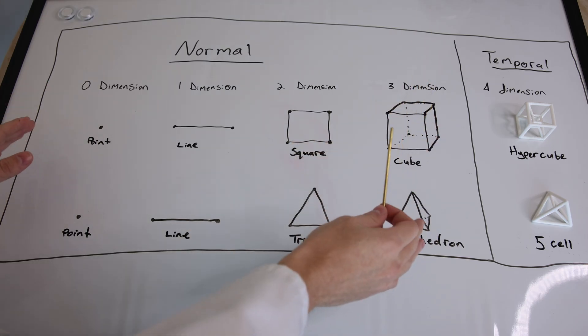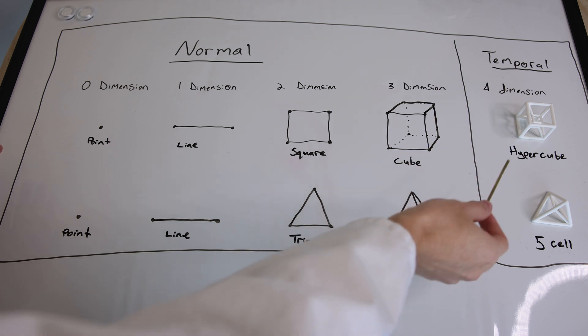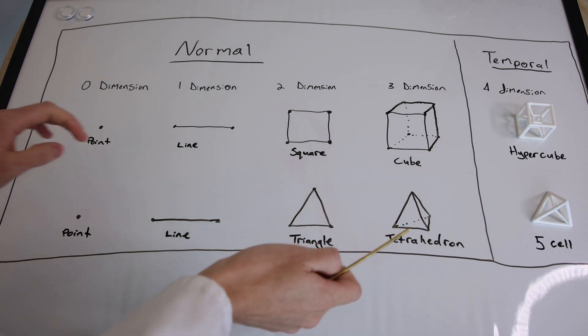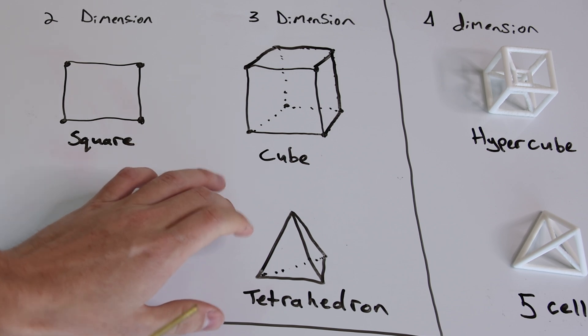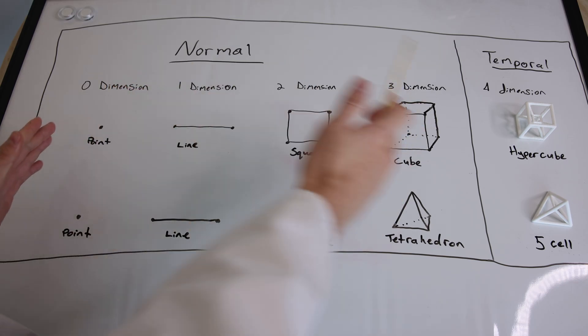We exist in three dimensions with a fourth dimension being our temporal dimension. I'm going to explain what a cube and a tetrahedron would look like within each of these dimensions.